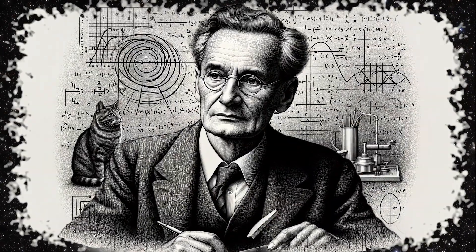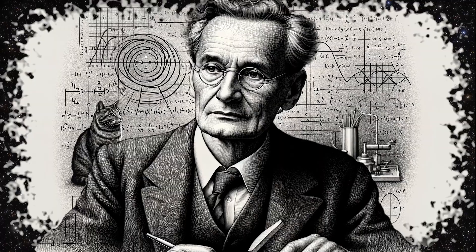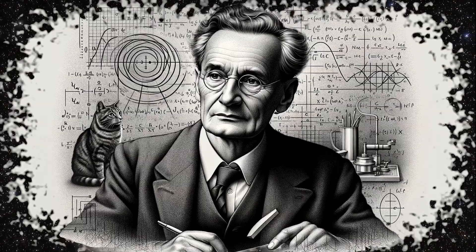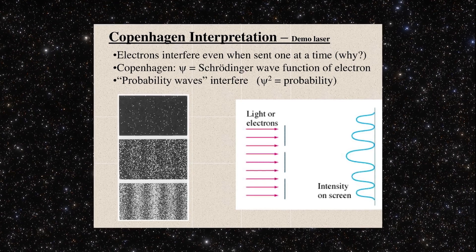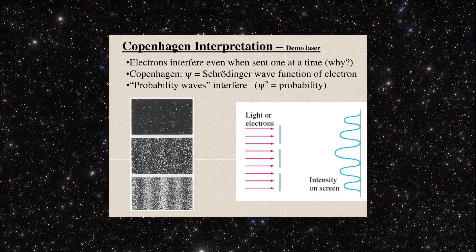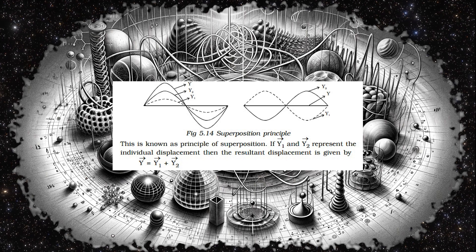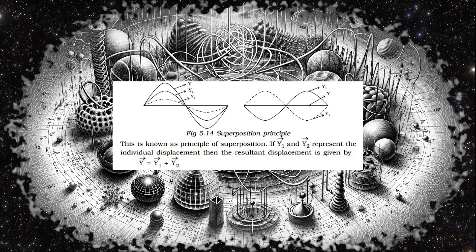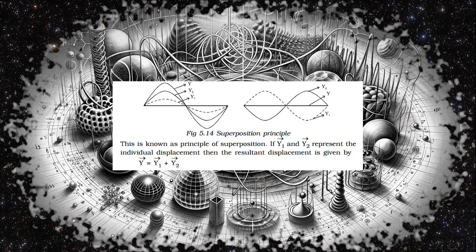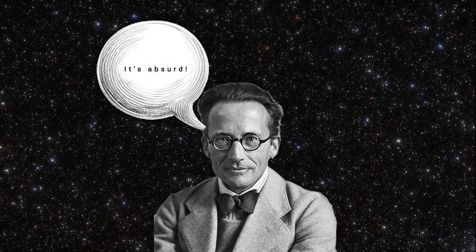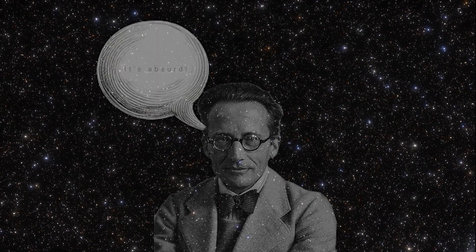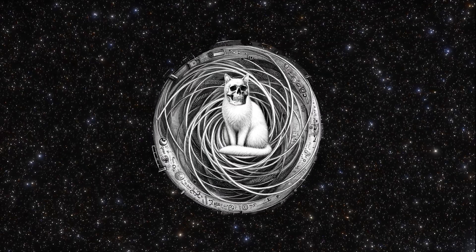Erwin Schrödinger, one of the pioneering architects of quantum theory, conceived his famous cat-in-the-box experiment as a challenge to the Copenhagen interpretation. He crafted a scenario that brilliantly illustrates the superposition principle — a fundamental cornerstone of the quantum world where particles can exist in multiple states simultaneously. But Schrödinger intended to highlight the absurdity this principle might suggest if applied to everyday objects: a cat both living and deceased until observed.